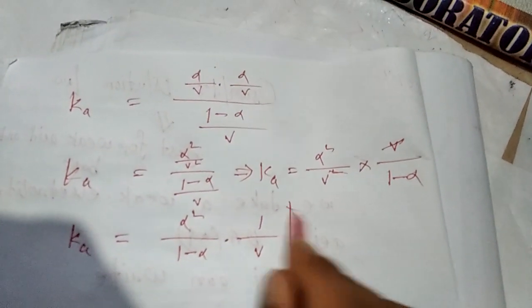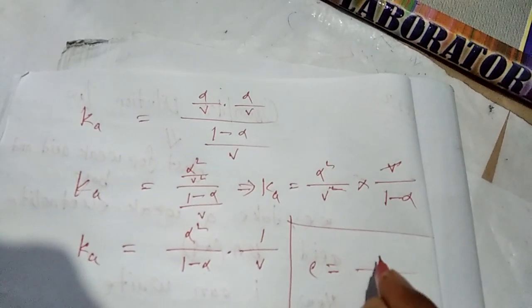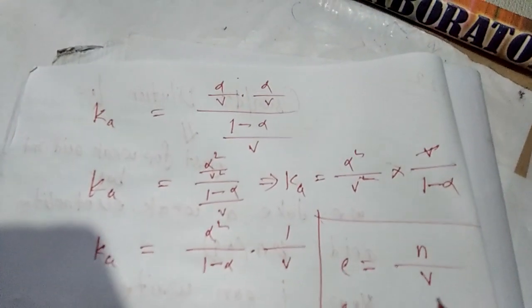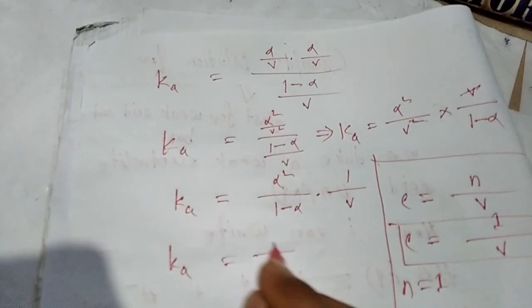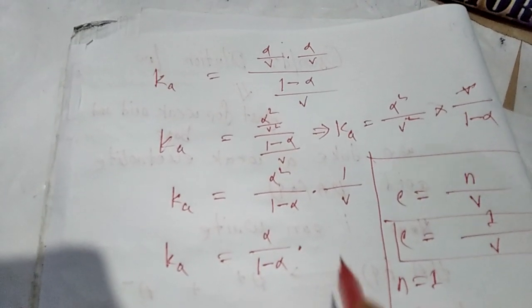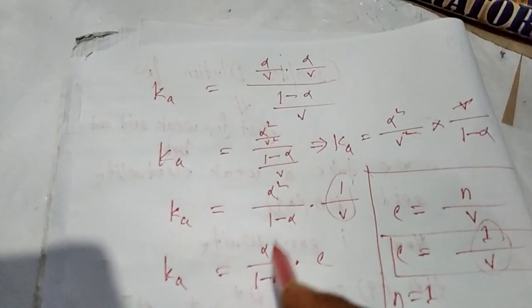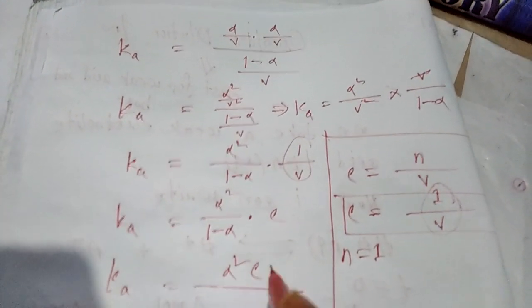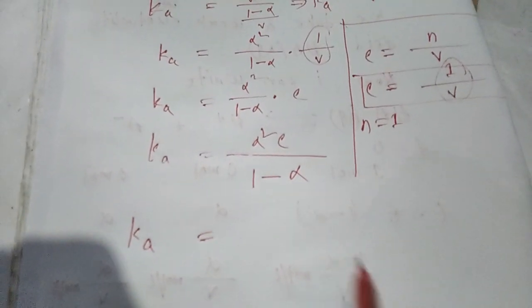Relation between concentration and mole: concentration equals n over V. Substituting 1 divided by V equals C: Ka equals alpha squared C over (1 minus alpha).